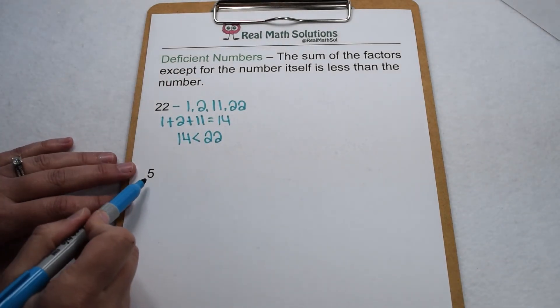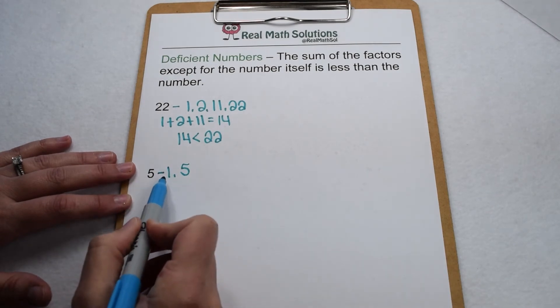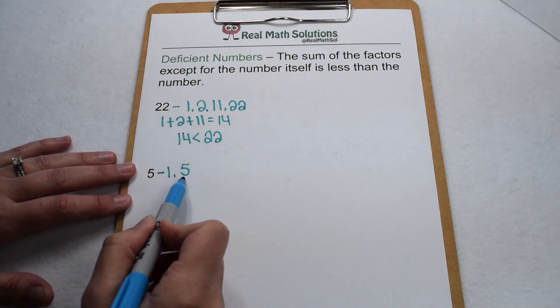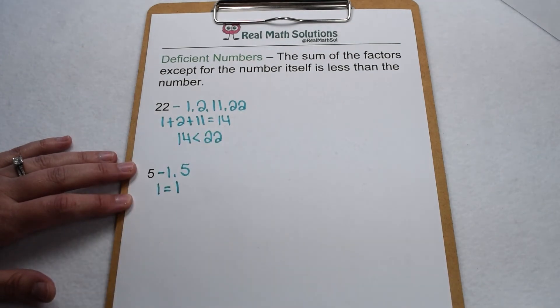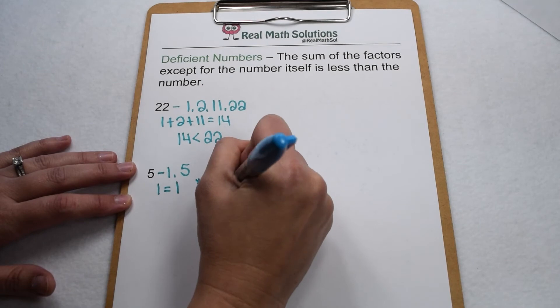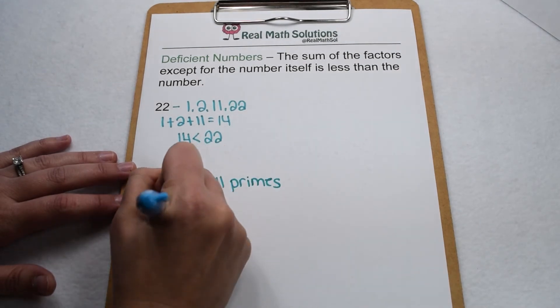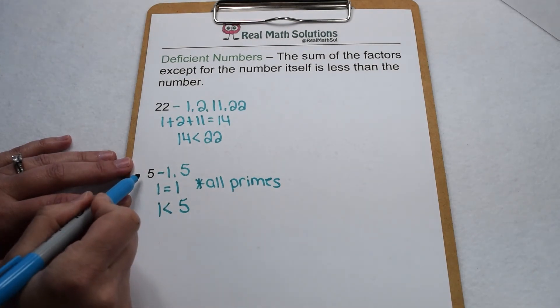Also, all prime values are going to be deficient numbers. 5 would be a prime number, which means its only factors are 1 and 5. Since we want to find the sum of all the factors except for the number itself, that means we can only find the sum of 1. Well, the sum of 1 is 1, and this is going to happen for all prime values. When we go to compare 1 to 5, 1 is definitely less than 5, making all prime values, including 5, deficient numbers.